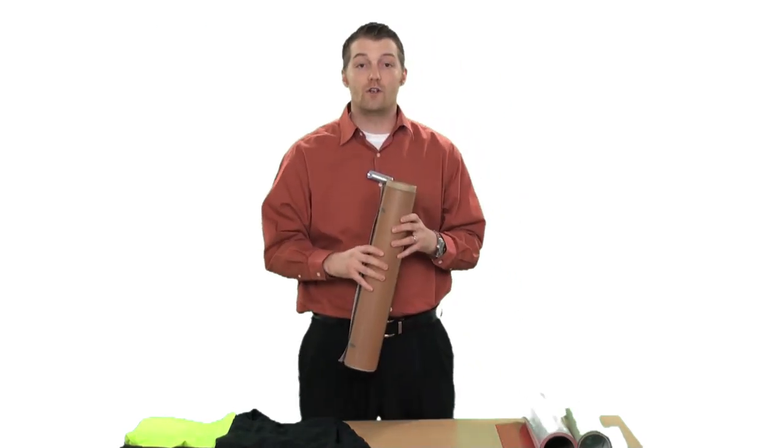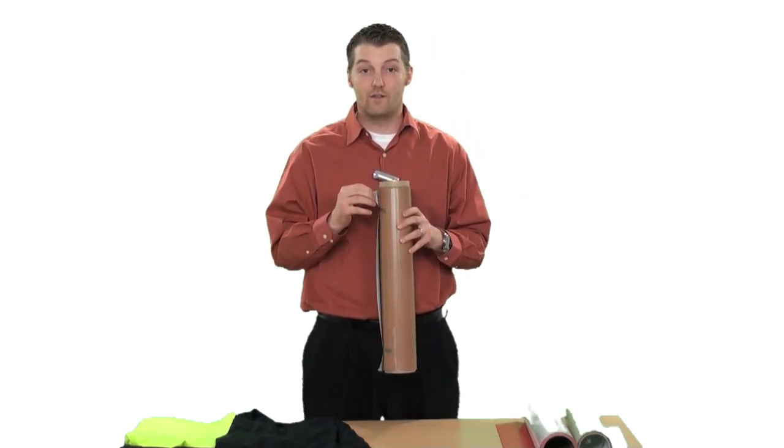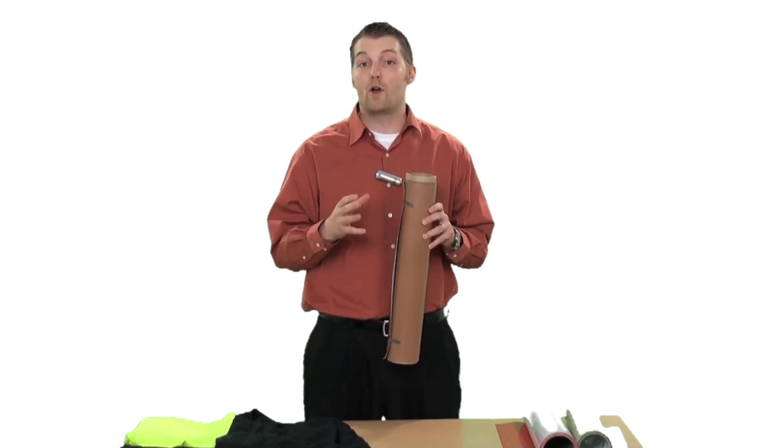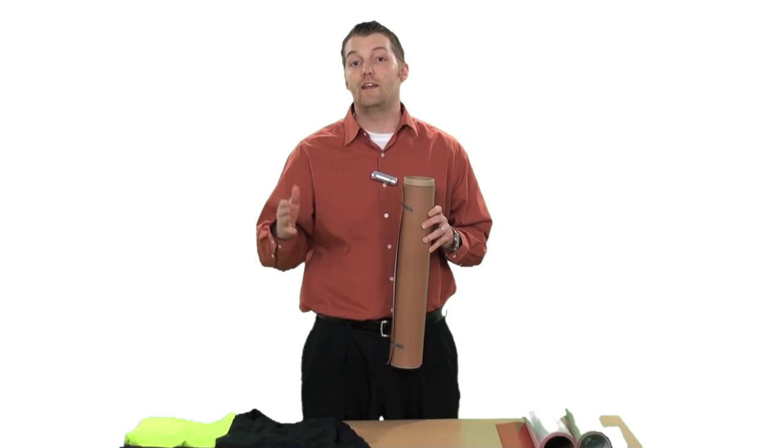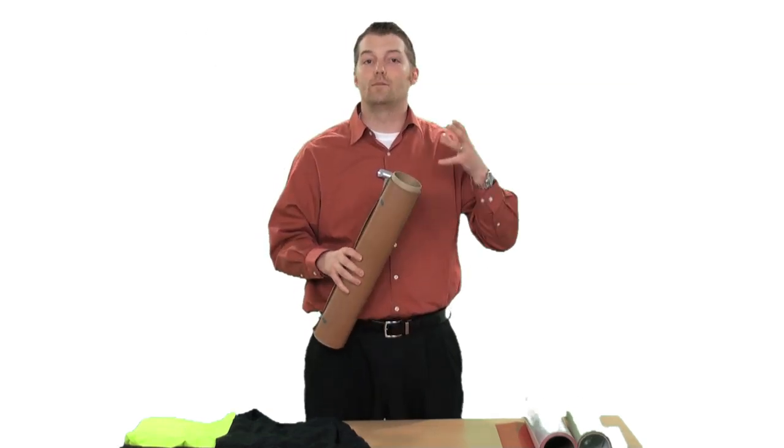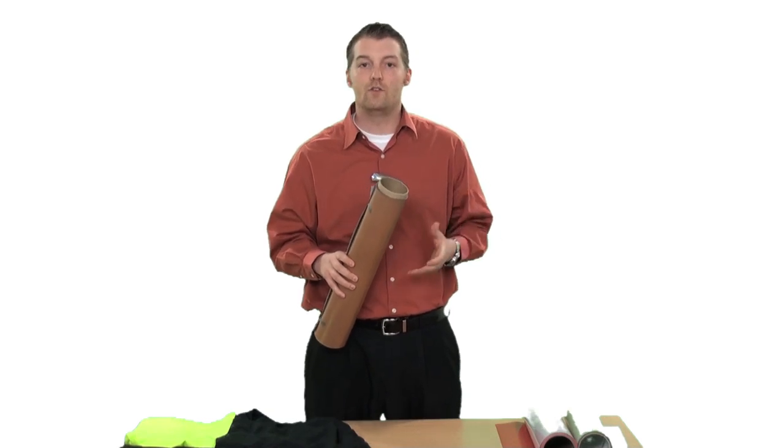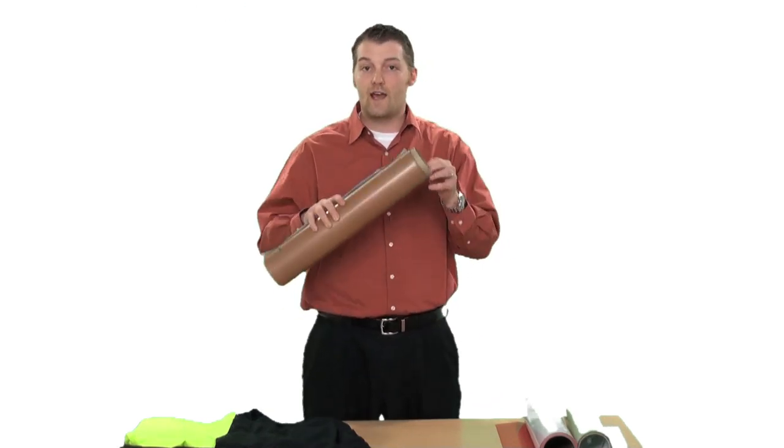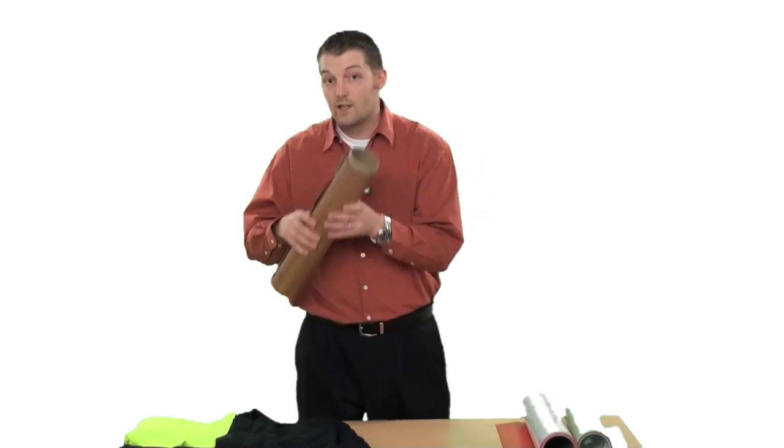The first product I'm going to show you is CAD-CUT reflective. This particular material is our economy version in the reflective lines. It's a great product to use. We're going to cut it, weed it, heat it, show you the application process. This is great for pretty much any type of fabric. You can use it on backpacks, t-shirts, nylon jackets, you name it. CAD-CUT reflective will work on it. It comes in silver.